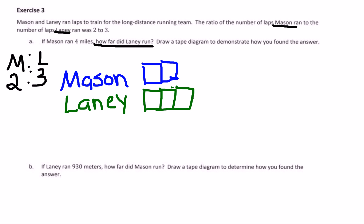I've drawn a tape diagram. Mason has 2 boxes and Lani has 3 boxes, and that represents the ratio. Now I can look at the other information they gave us: Mason ran 4 miles. This is Mason, and he ran 4 miles. To show that, I put it at the end of my tape diagram — 4 miles.